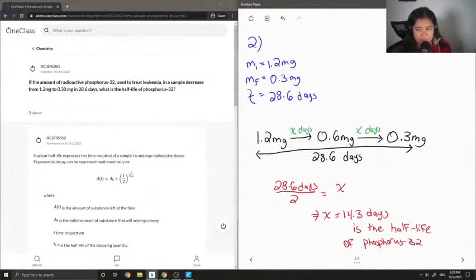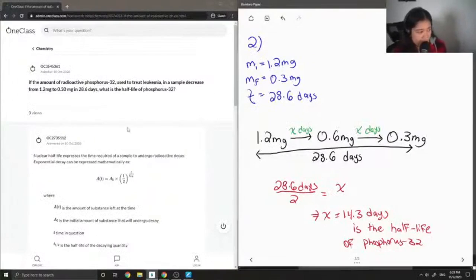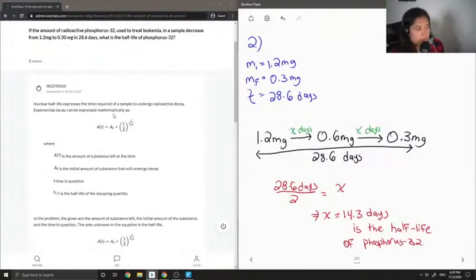So let's see the answer from our tutor. The nuclear half-life expresses the time required of a sample to undergo radioactive decay. Exponential decay can be expressed mathematically as At equals A0 times one-half to the power of t over half-life.